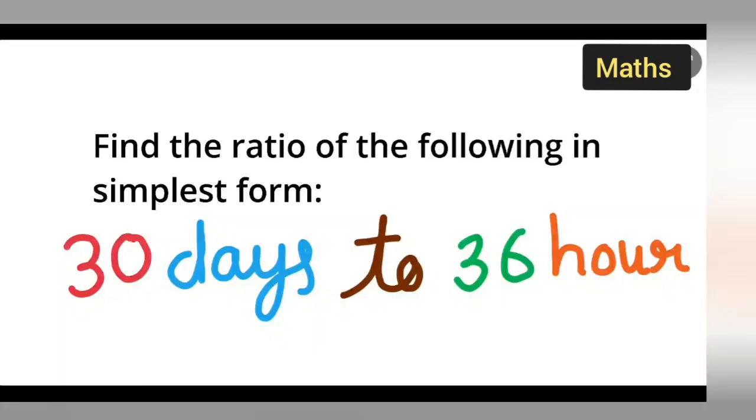Welcome to today's mathematics class. Today's question is: find the ratio of the following in simplest form. This is from Class 7 Mathematics, Ratio and Proportion chapter, Exercise 6.1. The problem is 30 days to 36 hours.